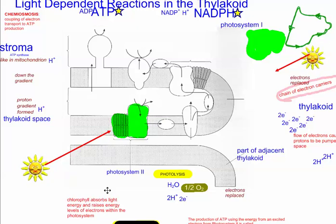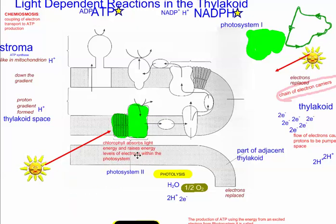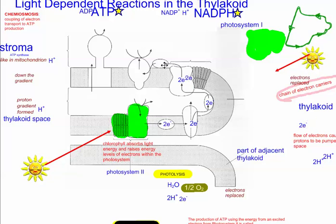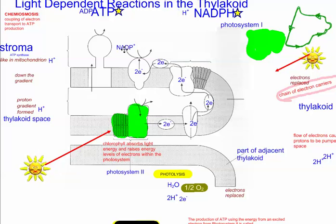Light energy excites this chlorophyll. The chlorophyll is going to absorb light energy, and the electrons are going to get excited and knocked out, moving down an electron transport chain. These electrons are going to be accepted in the end by something called NADP+, which combines with a proton to make NADPH.